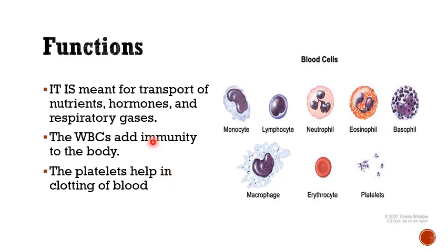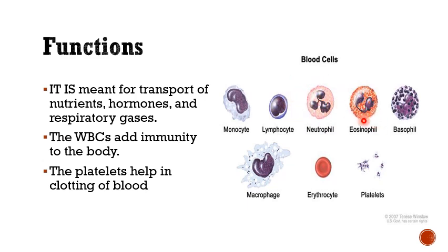The function of blood: RBCs transport nutrients, hormones, and respiratory gases; WBCs add immunity to the body; and platelets help in the clotting of blood. In the image you can see the various blood cells: erythrocytes (RBCs) are red due to hemoglobin; WBCs include monocytes, lymphocytes with a single nucleus, neutrophils which are multi-nucleated, eosinophils which are red/acidophilic, and basophils which are blue with granules.